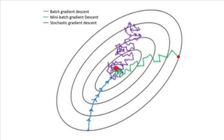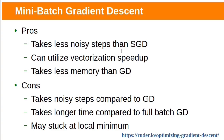Compared to stochastic gradient descent, mini-batch takes less noisy steps towards the minimum. Compared to full batch gradient descent, it will take less memory because the gradient is not calculated on the entire dataset — instead it considers a subset. It can also utilize vectorization speed-up. Disadvantages of mini-batch gradient descent include: it takes noisy steps compared to full batch gradient descent, it takes longer time compared to full batch gradient descent for convergence, and if the error surface is non-convex it may also get stuck at a local minimum.